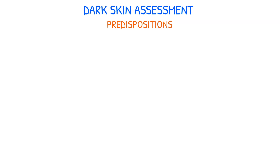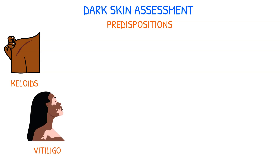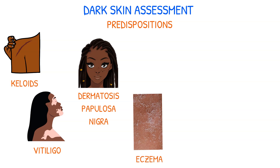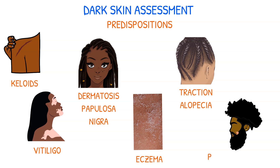Darker skinned individuals are predisposed to certain skin and hair conditions. Keloids are an overgrowth of collagenous tissue at the site of a skin injury. Vitiligo is a total loss of pigment in the affected area. Dermatosis papulosa nigra is characterized by small, pigmented, wart-like papules on the face. Atopic dermatitis, also known as eczema, is a chronic inflammatory skin illness that causes itchy, scaly rashes on various parts of the body. Traction alopecia is temporary or permanent hair loss due to trauma from hair rollers or tight braiding. Pseudofolliculitis is an inflammatory reaction to ingrown hairs caused by shaving too close to the beard area; pustules and papules may emerge in the affected area.